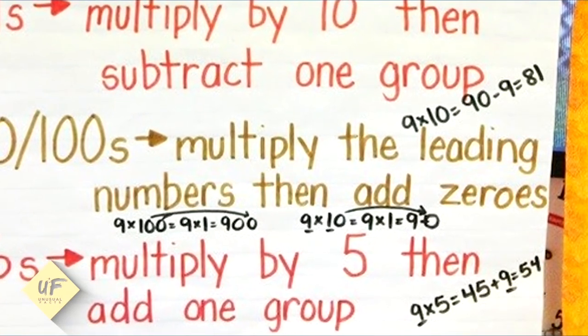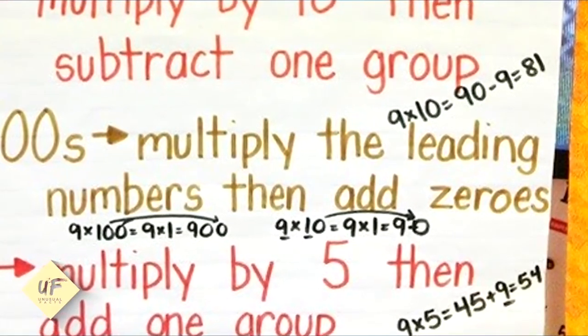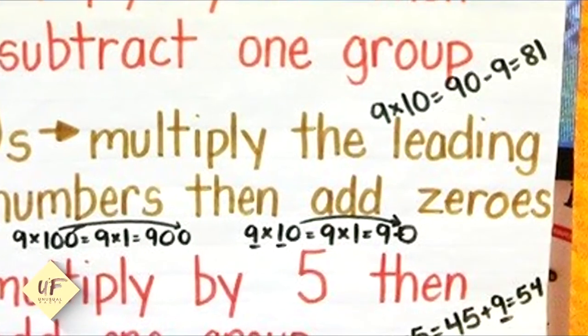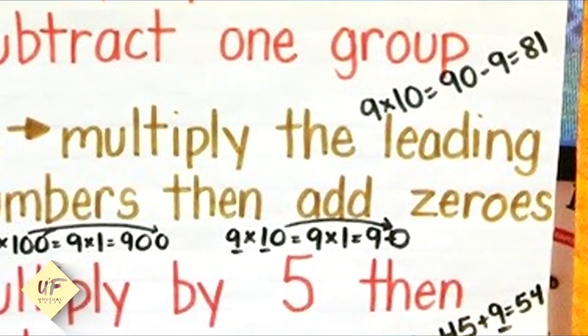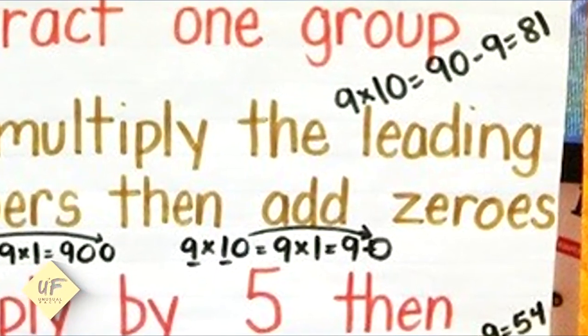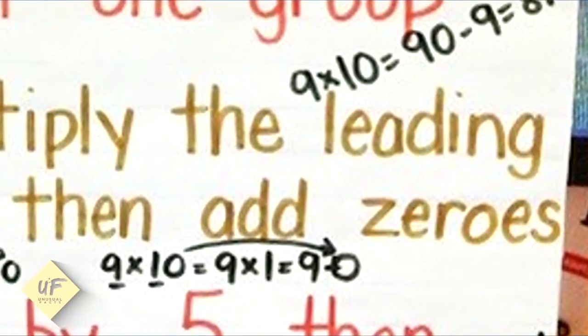Tens and hundreds: multiply the leading numbers, then add zeros. Nine times 100 equals nine times one, then you add those two zeros to the end: 900. Nine times ten equals nine times one equals nine, and then you add that zero to the end: 90.